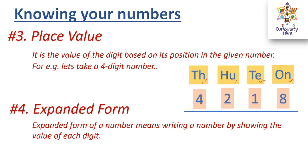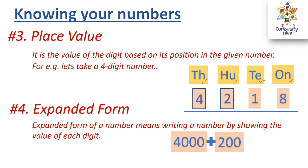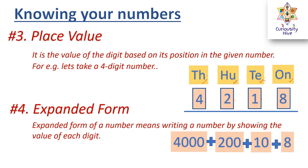Expanded form means writing a number by showing the value of each digit. For 4218: 4 thousands = 4 × 1000 = four thousand; 2 hundreds = 2 × 100 = two hundred; 1 ten = 1 × 10 = ten; 8 ones = 8 × 1 = eight. So the expanded form is 4000 + 200 + 10 + 8.